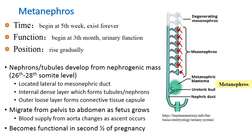The last stage is metanephros. Metanephros begins to develop in the fifth week and persists forever. Their positions arise gradually and change after development. Metanephros consists of nephronous tubules which develop from the nephrogenic mass, and it migrates in position from the pelvis to the abdomen as the fetus grows.